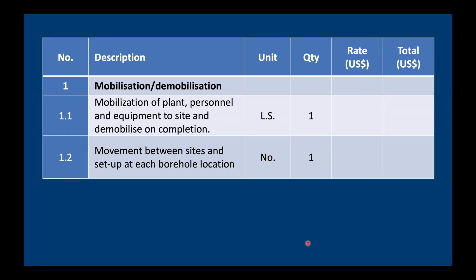Here's an example of a Bill of Quantities for the water well we discussed earlier. The columns are: a number, a description, unit, quantity, rate per unit, and total cost. In Bill number one we cover mobilization and demobilization. The first row covers all costs associated with coming to the site with all the equipment and personnel. It's paid as a lump sum and there's only one mobilization. We also have a separate line for setting up at the borehole location, in case we need to drill a second well.